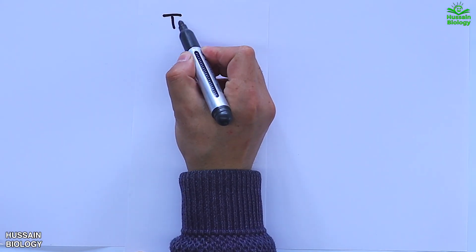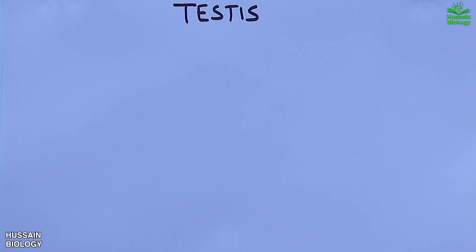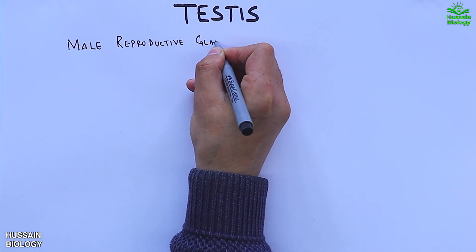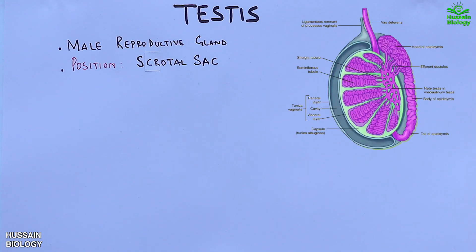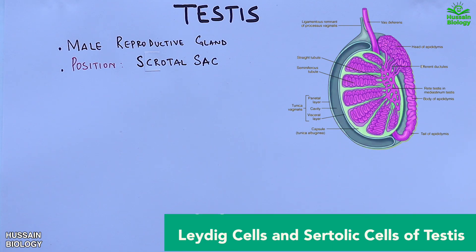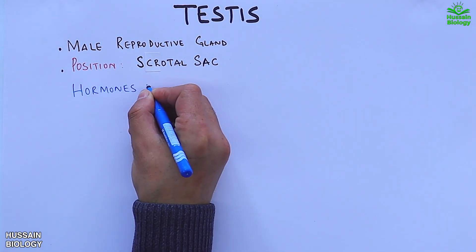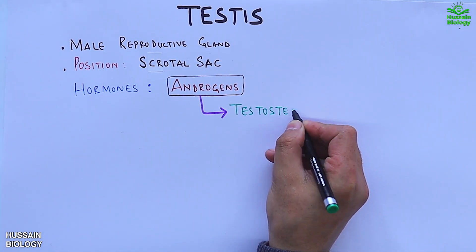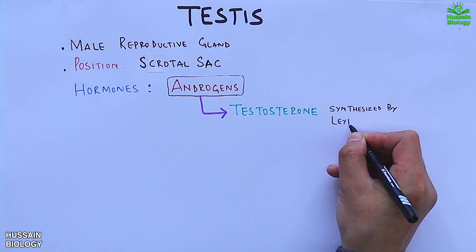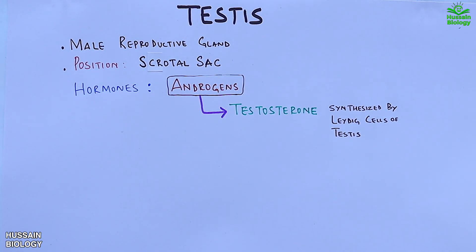First, let's explain the testes and its hormones. It is a male reproductive gland positioned in the scrotal sac, as we can see in this diagram. For hormonal secretion we have two important cells: Leydig cells and Sertoli cells. The first hormone is testosterone, which is an androgen synthesized by the Leydig cells of the testes. Testosterone has a wide range of effects in males at different stages of life.